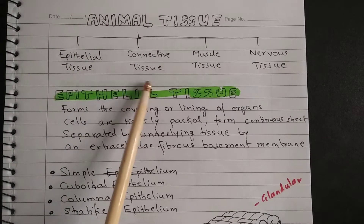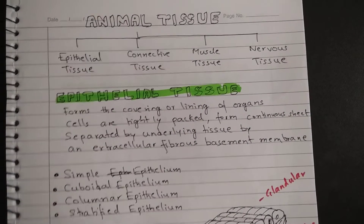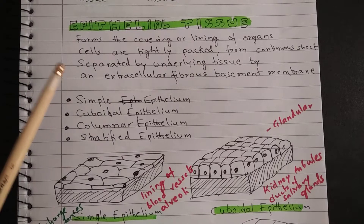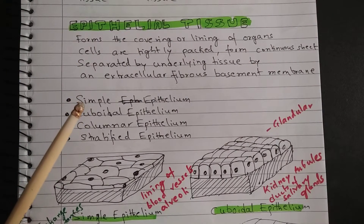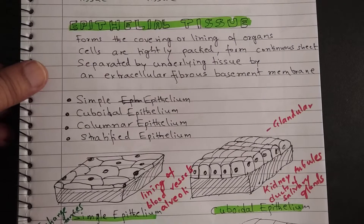The four types of animal tissue are: epithelial tissue, connective tissue, muscle tissue, and nervous tissue. Let us begin with epithelial tissue. Epithelial tissue forms the covering or lining of organs, and cells of epithelial tissues are tightly packed. Epithelial tissue forms a continuous sheet and is separated from the underlying tissue by an extracellular fibrous basement membrane. There are four types of epithelial tissue: simple epithelium, cuboidal epithelium, columnar epithelium, and stratified squamous epithelium.